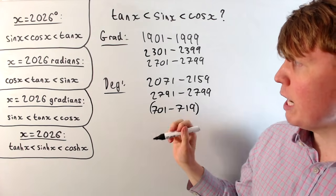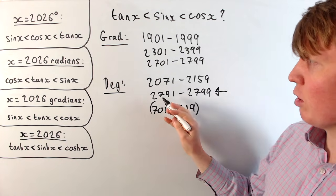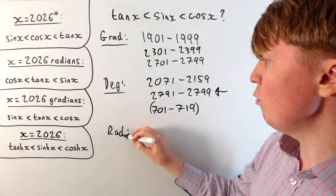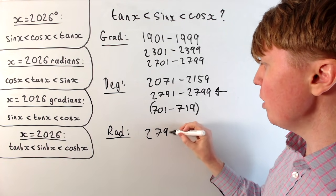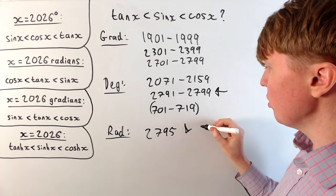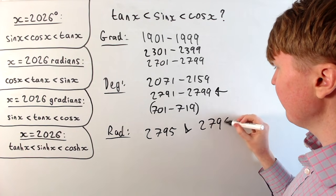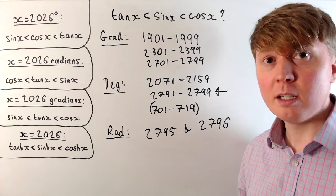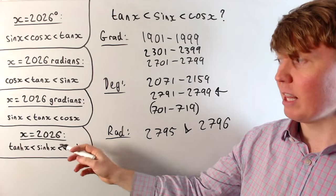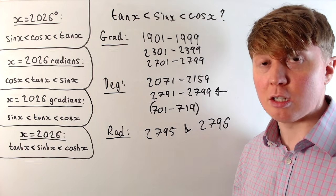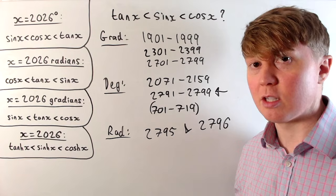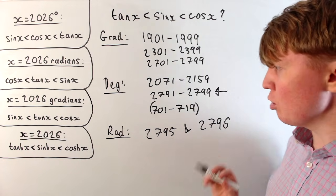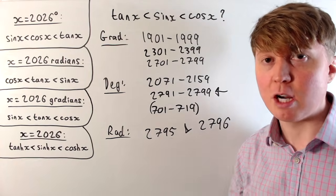And then finally, if we look at radians, we're really interested in this region now, the 2791 to 2799. So in radians, this is satisfied in 2795 and also 2796 of this range. So in these two years, we actually have all four of these have the same inequality. So tan less than sine less than cos for hyperbolic, and then also for our regular trig functions in degrees, radians and gradians. These are definitely the two years to look out for where things start to really get interesting.